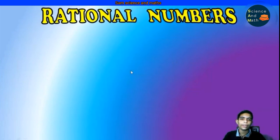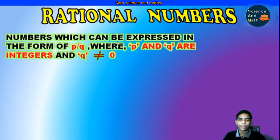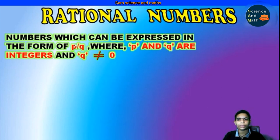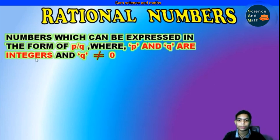Let us understand the basic points to remember about rational numbers. First point: numbers which can be expressed in the form of P/Q, where P and Q are integers and Q is not equal to 0. So it is basically a fraction where P and Q must be integers, and Q is not equal to 0. We will understand why Q is not equal to 0 in the upcoming points.